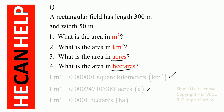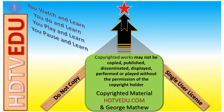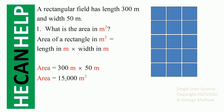We have a length of 300 meters and a width of 50 meters, so we put 50 meters here and 300 meters here. The area of a rectangle is area equals length times width.